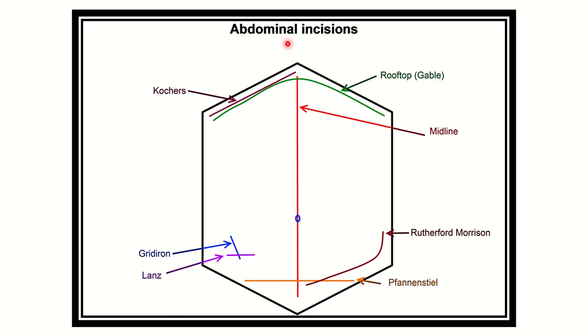We can see here the abdominal incisions. Kocher's incision is done in the right subcostal region. Rooftop or Gable incision covers the total abdomen along the right and left costal margins. Midline incision lies in the midline from the xiphoid process to the symphysis pubis. Gridiron and Lanz incisions are given for appendectomy operations. Here we can see the Rutherford Morrison incision and Pfannenstiel incision which is suitable for lower uterine cesarean section.